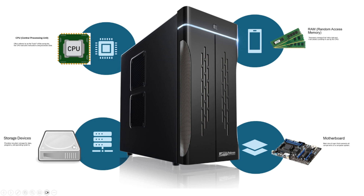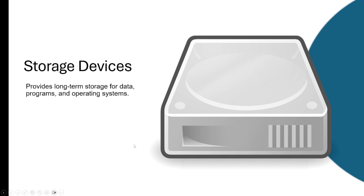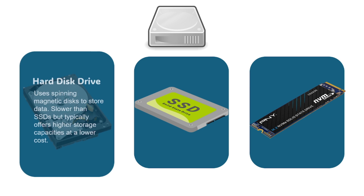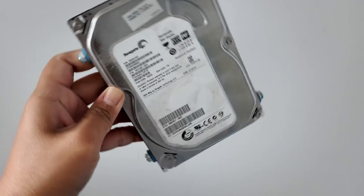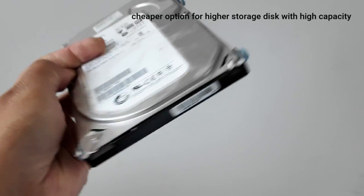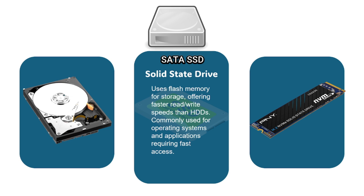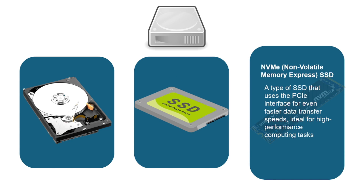Now let's move on to the third component, which is storage devices. If RAM is short-term storage, storage devices are for long-term data storage, meaning you won't lose the data when you power off the computer. The first type is the HDD, the oldest in the group, sometimes called spinners because they use spinning magnetic disks. These are no longer commonly used as a primary disk because they are slow, but still used as secondary disks for storage since they are a cheaper option for high capacity. Next is the SATA SSD, which is commonly used in the workplace because it is faster than the HDD. There's also the NVMe SSD, which uses PCIe and is more than three times faster than SATA SSD.